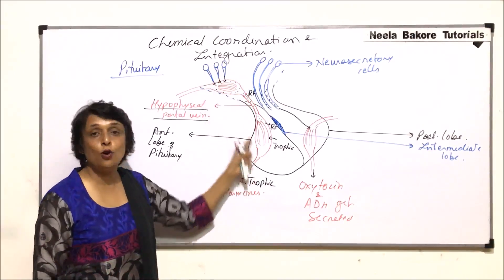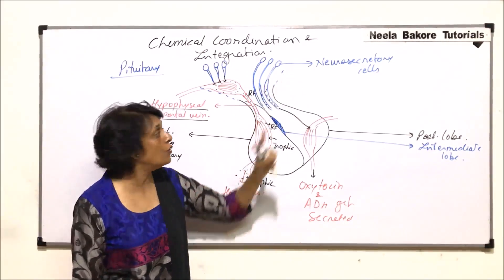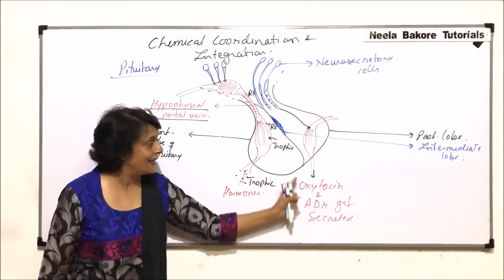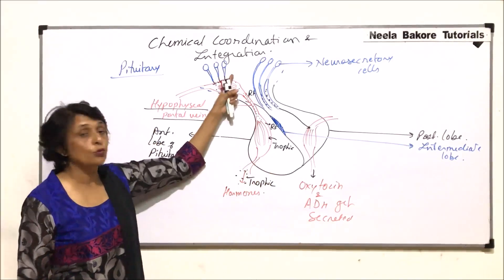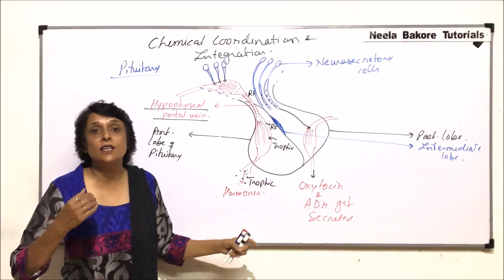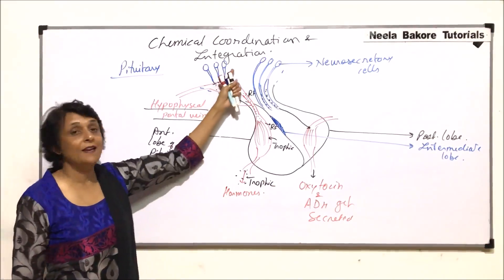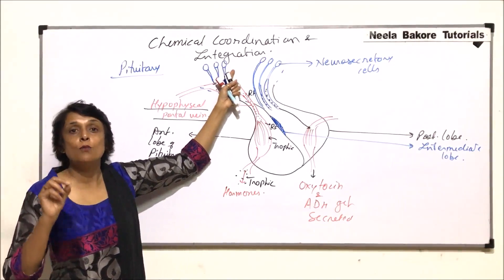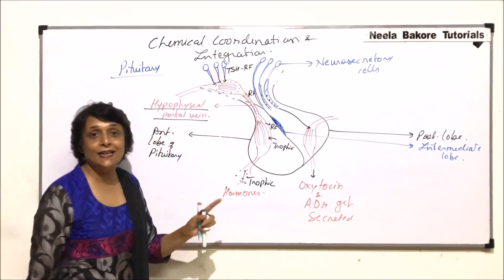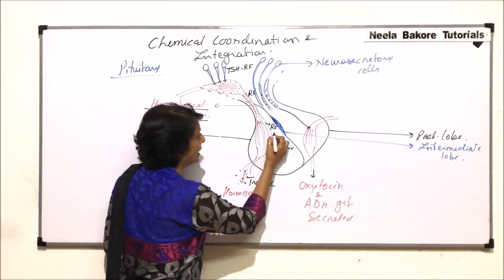Both lobes of the pituitary — anterior and posterior — are connected to the hypothalamus, but the connections are different. The anterior lobe connection is through the hypophysial portal system, while the posterior lobe connection is only through the axons of the neurosecretory cells. The hormones of the pituitary gland are produced in response to the neurohormones from the hypothalamus. For example, the thyroid stimulating hormone releasing factor is produced by the hypothalamus and comes to the anterior lobe of the pituitary.